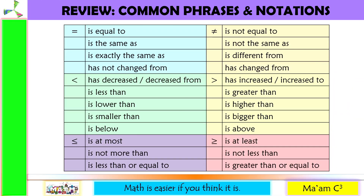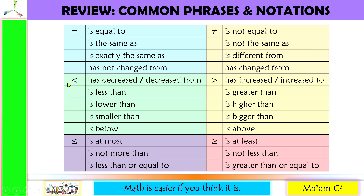Let us recall the common phrases and notations used in hypothesis testing. You use the equal sign when you encounter the words: is equal to, is the same as, is exactly the same as, or has not changed from. You use not equal to if you encounter words such as: is not equal to, is not the same as, is different from, and has changed from. We use the less than symbol when we encounter words such as: has decreased or decreased from, is less than, is lower than, is smaller than, or is below.